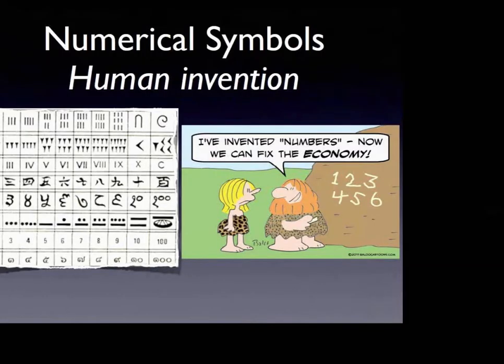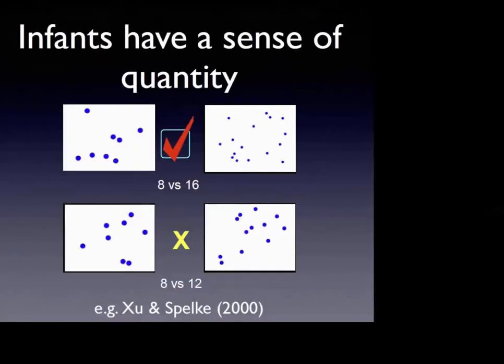We didn't need to have any numbers over here or over here to be able to see which one has more. We could just tell by looking without counting.